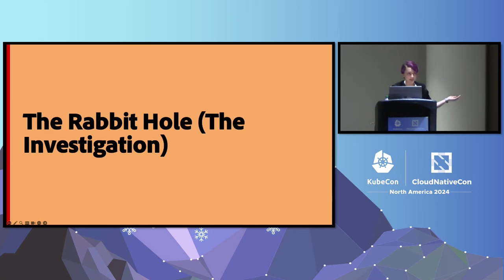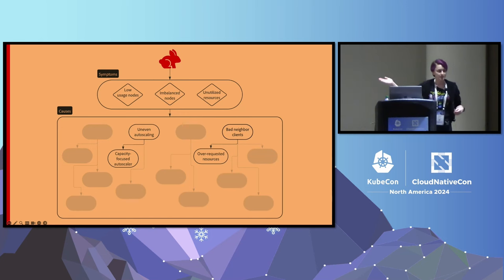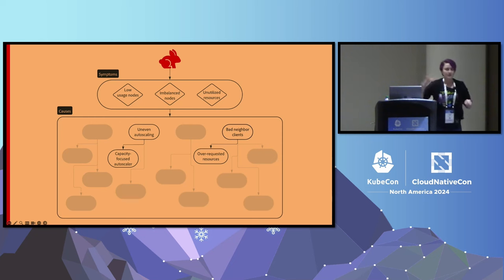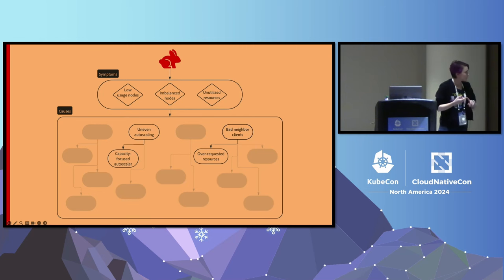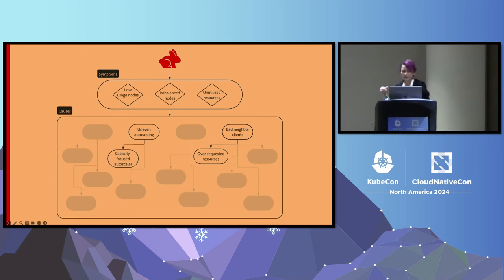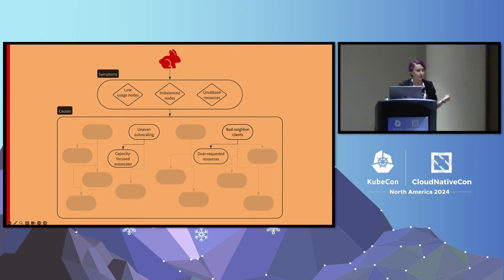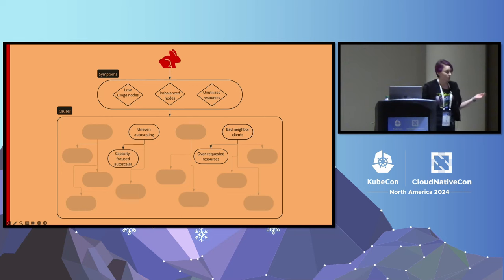So we started investigating. We knew the symptoms: low-usage nodes, imbalanced nodes where CPU might be very high but memory was very low, and unutilized resources being requested by clients and not getting used. We knew a few of the causes too — capacity-focused autoscaling, since the cluster autoscaler that ships with Kubernetes is focused on reliability and capacity, not cost. We also knew that some clients were over-requesting resources.